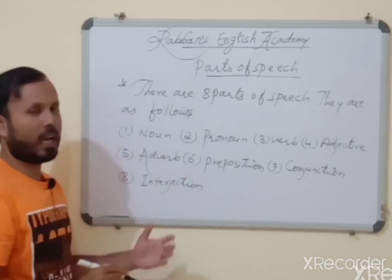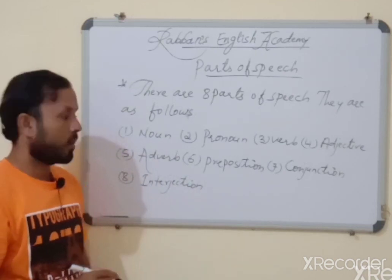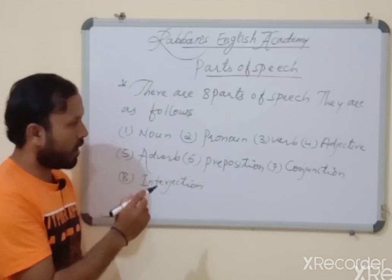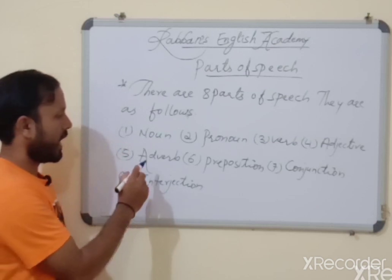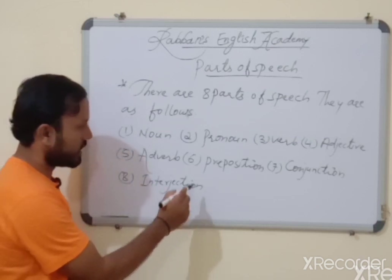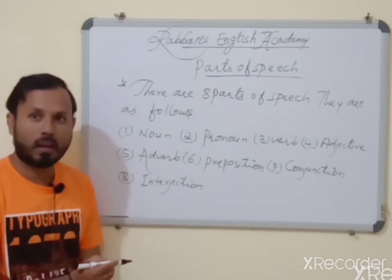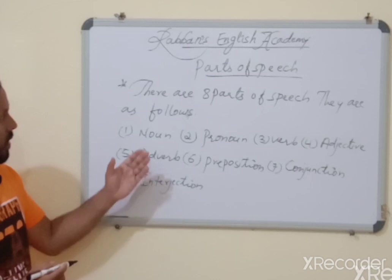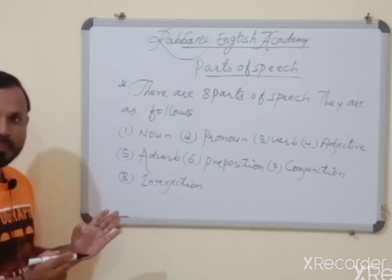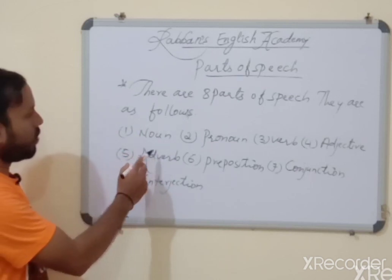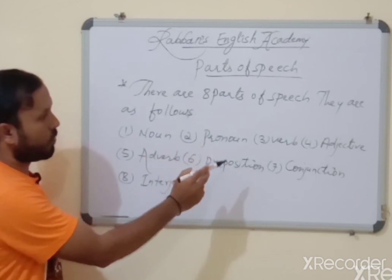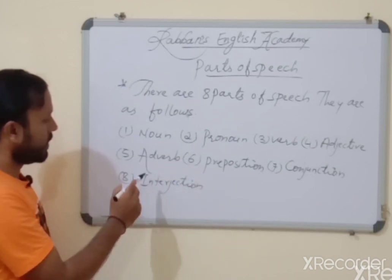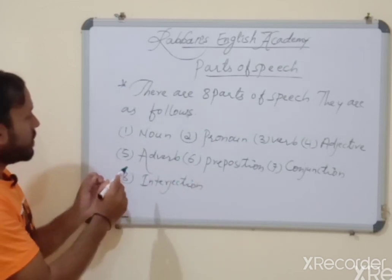Once again, I would like to repeat. Parts of speech: noun, pronoun, verb, adjective, adverb, preposition, conjunction, and interjection.